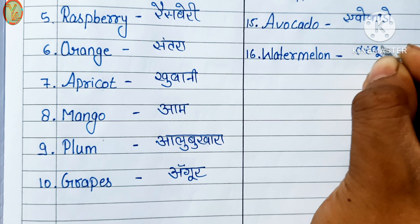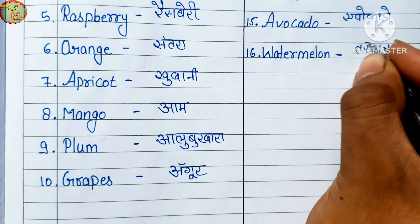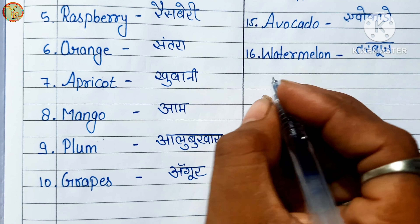Sixteenth number: watermelon. Watermelon means tarbooj.